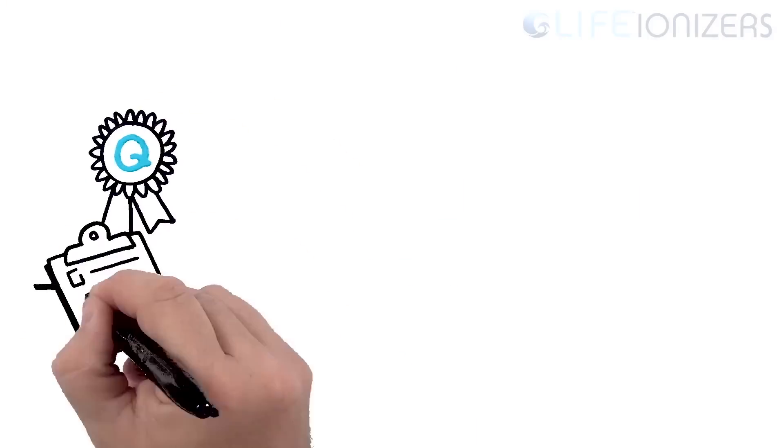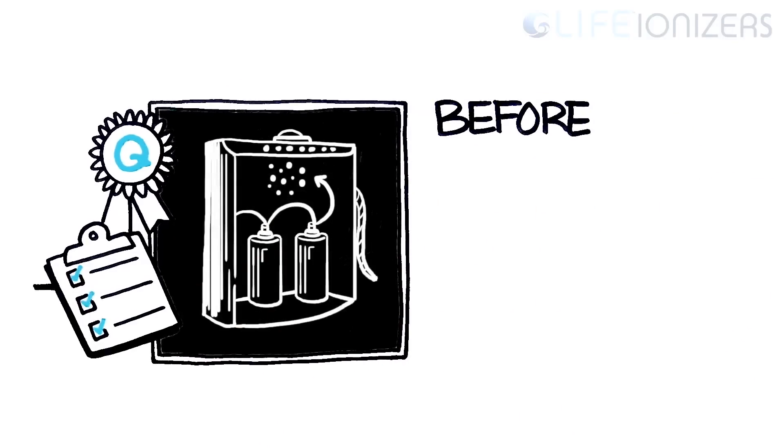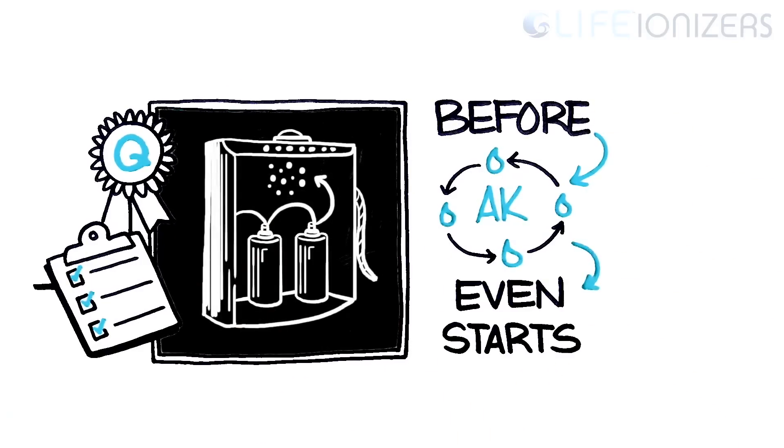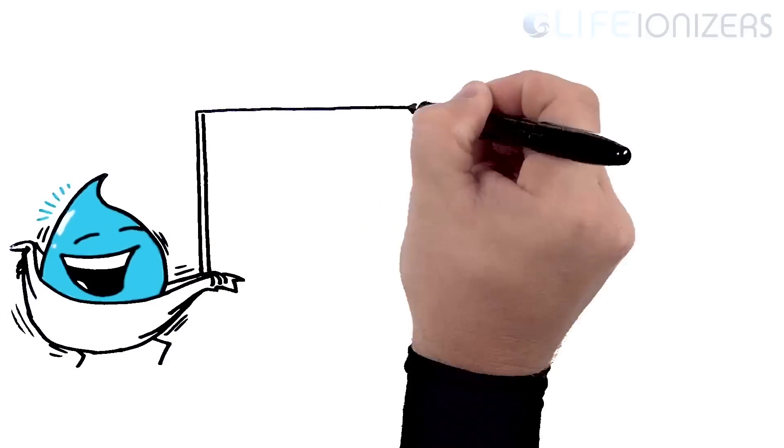All high-quality residential water ionizers should have comprehensive filtration before the ionization process even starts. Once the water is clean of contaminants, it enters the ionizer's chambers.